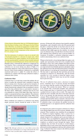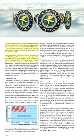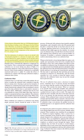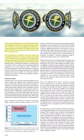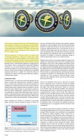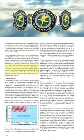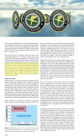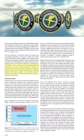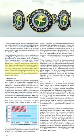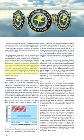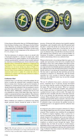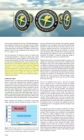The first indication of carburetor icing in an aircraft with a fixed-pitch propeller is a decrease in engine RPM, which may be followed by engine roughness. In an aircraft with a constant speed propeller, carburetor icing is usually indicated by a decrease in manifold pressure but no reduction in RPM, as propeller pitch is automatically adjusted to compensate for loss of power. Although carburetor ice can occur during any phase of flight, it is particularly dangerous when using reduced power during a descent. Under certain conditions, carburetor ice could build unnoticed until power is added.